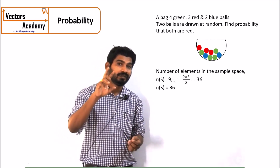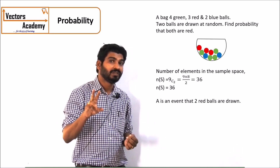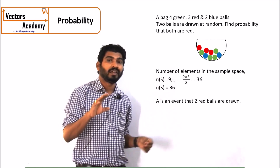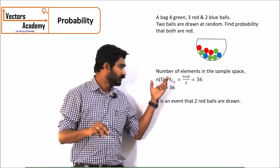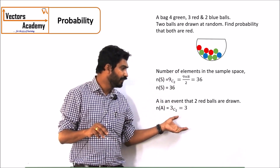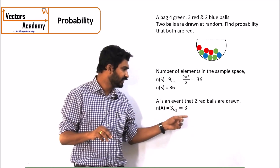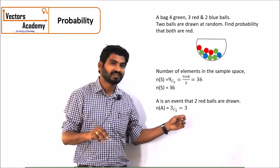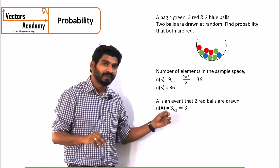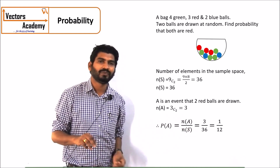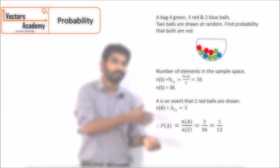We need exactly 2 red balls. Total red balls are 3, and we need to select 2 from them, so n(A) = 3C2 = 3. The probability of event A is 3 by 36, that is 1 by 12. This is how we solve probability using combinations.